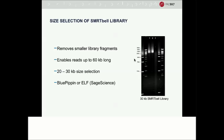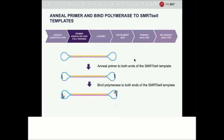Size selection is key for large genome sequencing. We typically recommend using Blue Pippin or ELF from Sage Science for size selection of 20 to 30 kb libraries. This process removes smaller library fragments and increases the abundance of the longest reads in your dataset. After size selection, primers are annealed to adapters, and then the polymerase is bound to the template molecules. At this point, the SMRTbell templates are loaded onto the sequencing machine, where they are tethered to the bottom of sequencing wells so the sequencing reaction can be observed in real time.